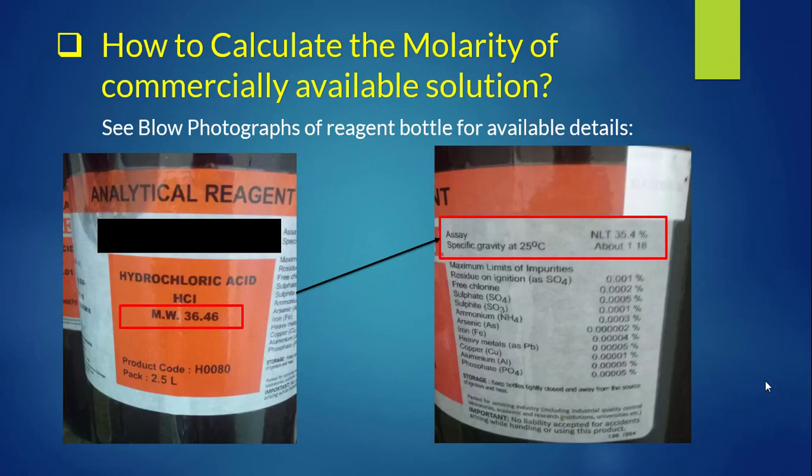Now let's take a practical example and calculate the molarity of a commercially available solution, which is very useful for people who work in a laboratory. Here is a picture of a reagent bottle of hydrochloric acid. Three values are important: the molecular weight of HCl, which is 36.46; the percentage purity (SA), which is 35.4%; and the specific gravity, which is 1.18.